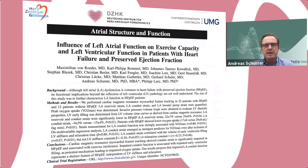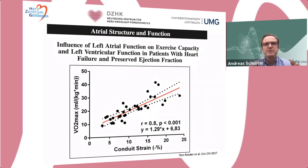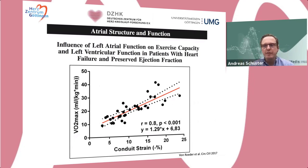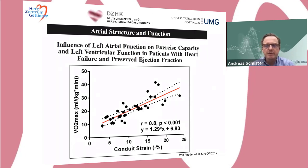We applied this principle prospectively to 22 patients with heart failure and preserved ejection fraction, studied invasively with conductance catheters to assess ventricular relaxation and stiffness. We found that conduit strain — the passive ejection of blood from the left atrium — was the best predictor of exercise intolerance as expressed by VO2 max, independent of the invasively assessed stiffness and relaxation constants, which are still considered the gold standard. This atrial strain information exceeds the value of invasive assessment in HFpEF patients.